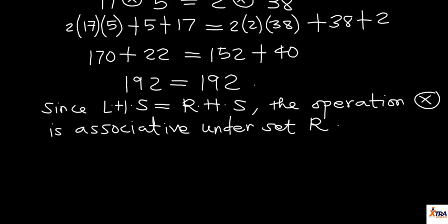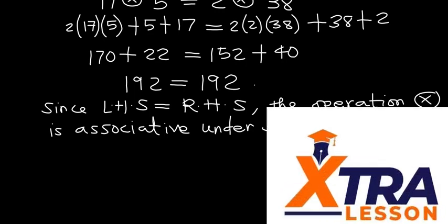Since the left-hand side equals the right-hand side, the operation is associative on set R. In the next class, we'll look at another example on the associative property before moving to the next property. After that, we'll consider the distributive property, then identity elements and inverse elements. See you next class — have a nice day.